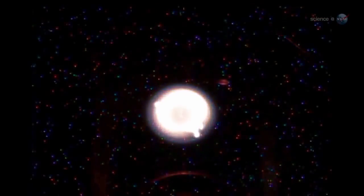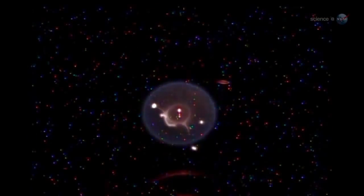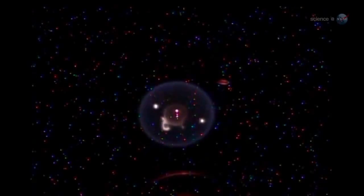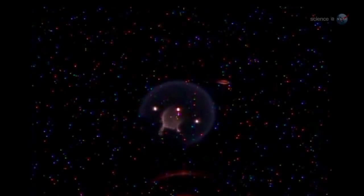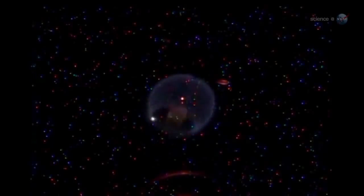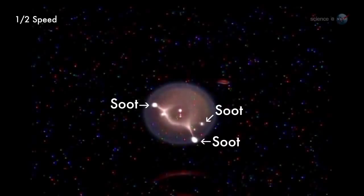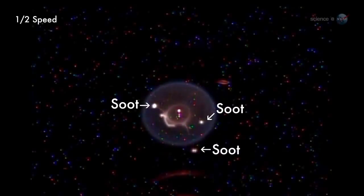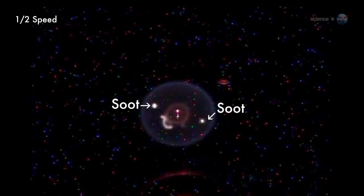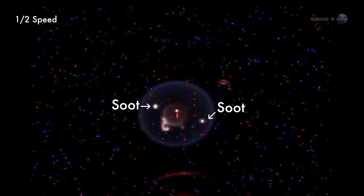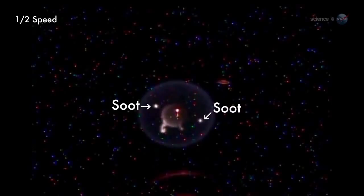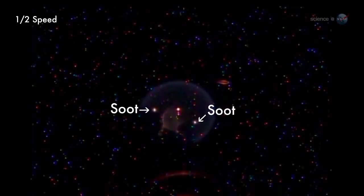The flame forms a blue spherical shell 15-20 mm in diameter around the fuel. Inside that spherical flame, we see some bright yellow hotspots. Those are made of soot. Heptane produces a lot of soot as it burns, he explains. Consisting mainly of carbon with a sprinkling of hydrogen, soot burns hot, around 2000 degrees Kelvin, and glows brightly as a result.